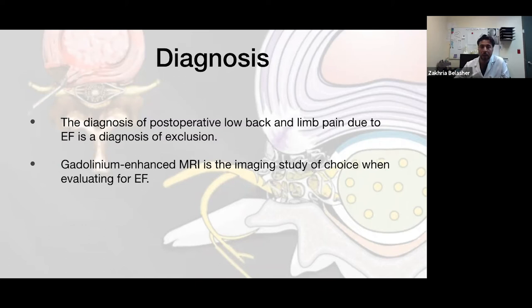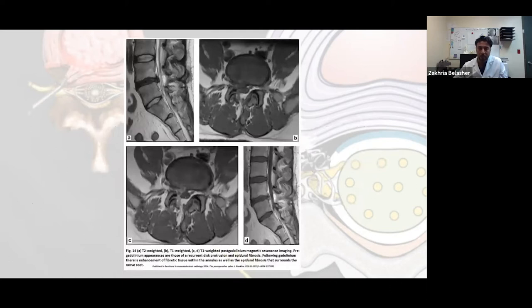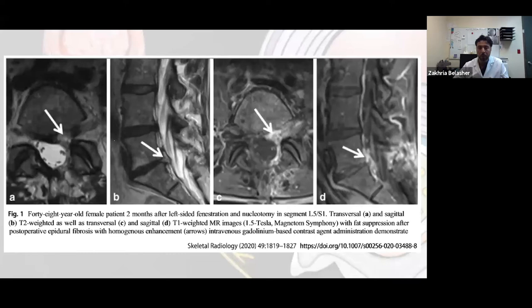Before and after giving the contrast, you can tell if it's a herniated disc or if it's scar around the nerve root or cord. There are a couple of slides showing how contrast enhances the fibrosis, and now you can also use MRI fat suppression settings that make the fibrosis more clear.